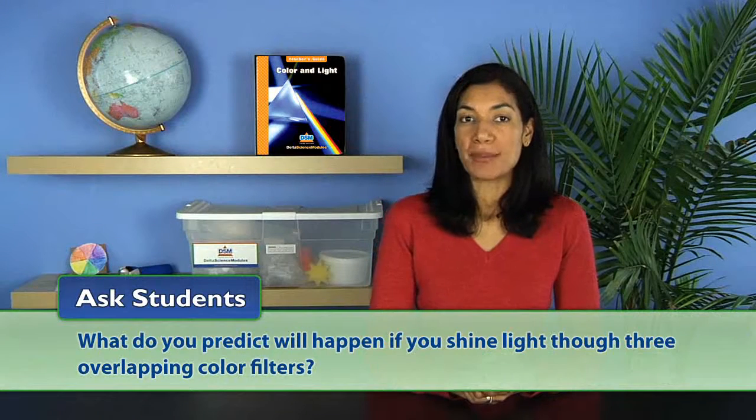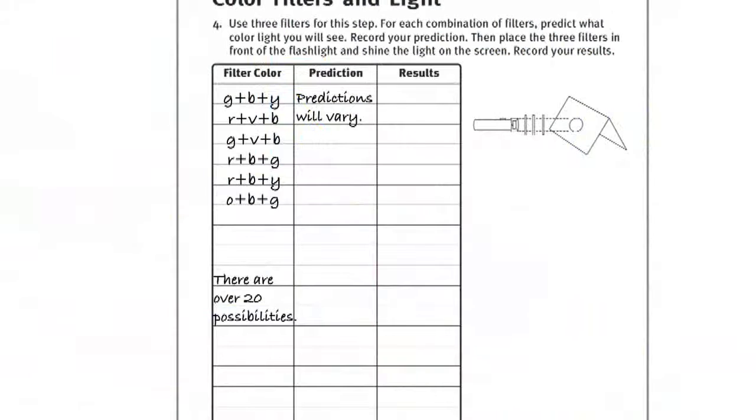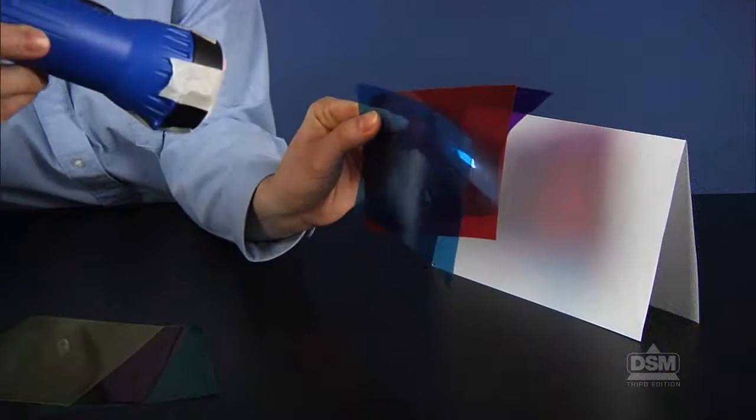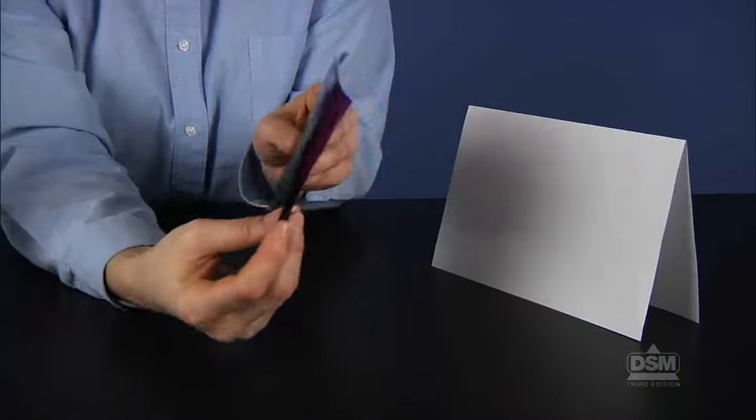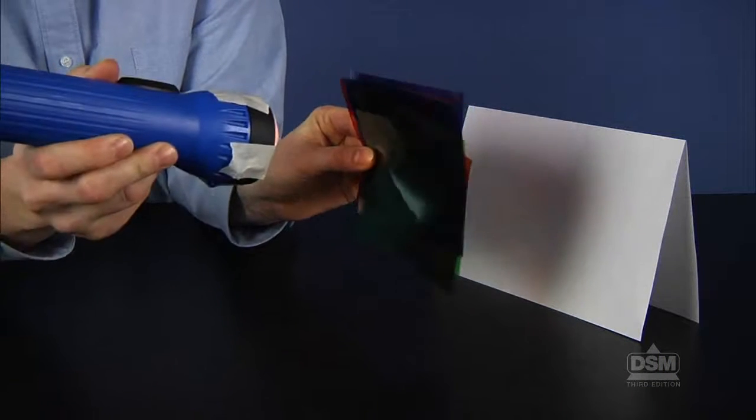Then ask, what do you predict will happen if you shine light through three overlapping color filters? Have students record their predictions in the third chart on their activity sheets. Darken the room once again so the students can test their three filter combinations. When students have finished, instruct them to overlap all six filters at one time and to observe what happens to the light. They will see that no light is able to pass through all six filters.